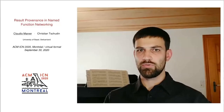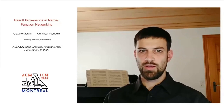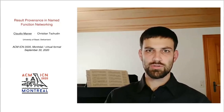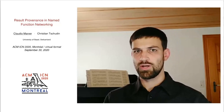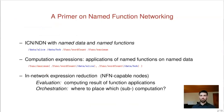Result Provenance in Named Function Networking. My name is Claudio Markser, and this is work together with Christian Tschudin, my PhD advisor at the University of Basel. NFN is a named data network where not only named data is available but also named functions. Named functions are common NDN content objects that contain executable code. What applications in NFN do is compose computation expressions from data names and function names.